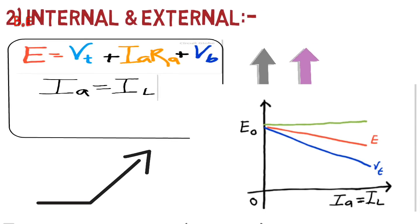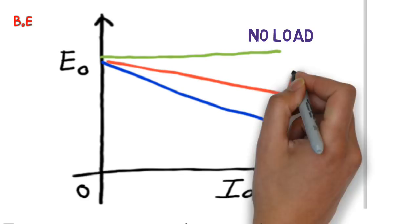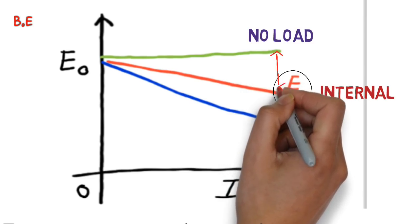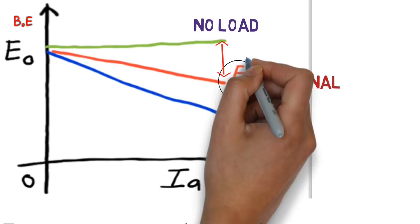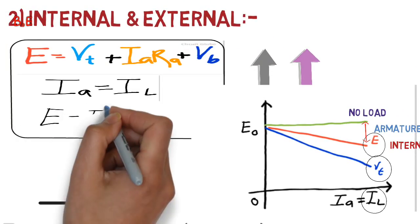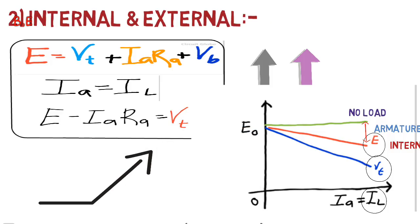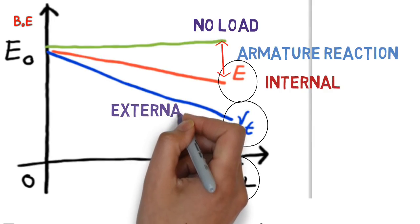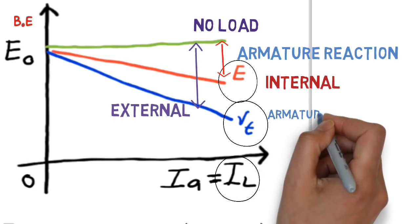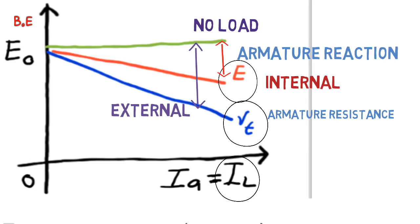The characteristic plotted between induced voltage and load current is called the internal characteristic. The difference between no load induced voltage and on-load induced voltage is because of increase in IL and armature reaction. From the equation, E − IA·RA = VT, so increasing load increases IL and armature current, which decreases terminal voltage. The characteristic between terminal voltage and load current is called the external characteristic, and the difference between them is due to armature reaction and resistance drop due to IL.